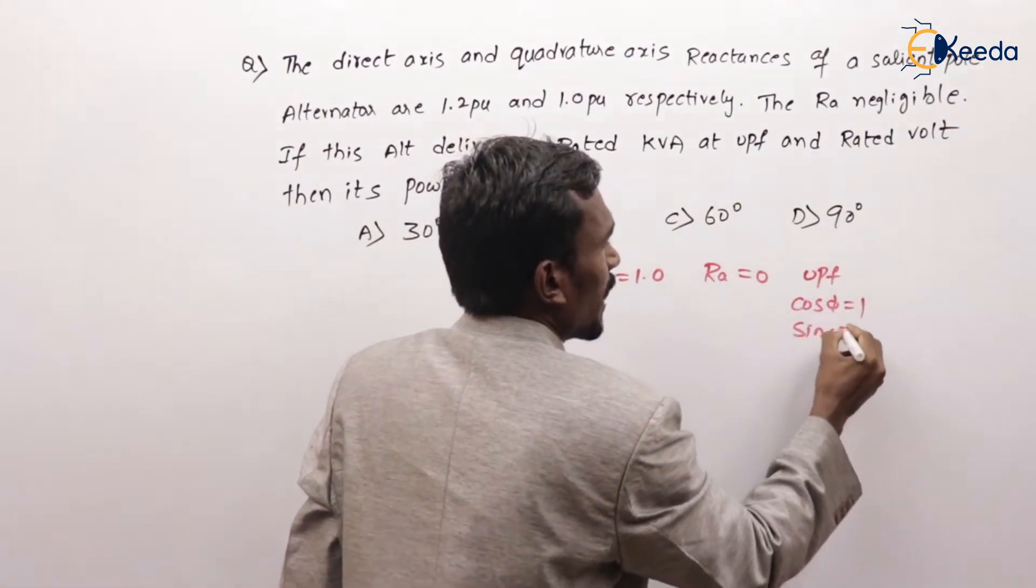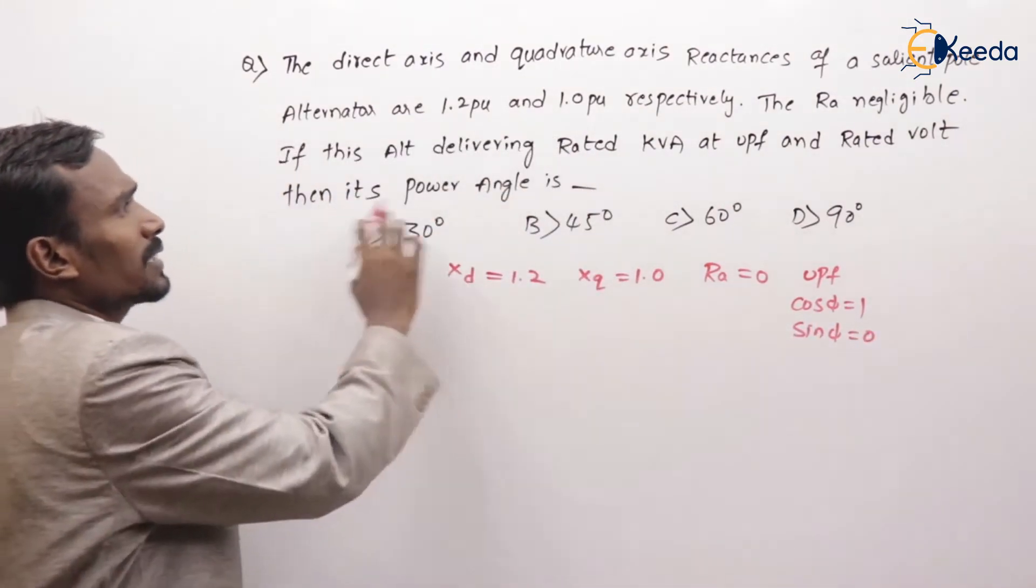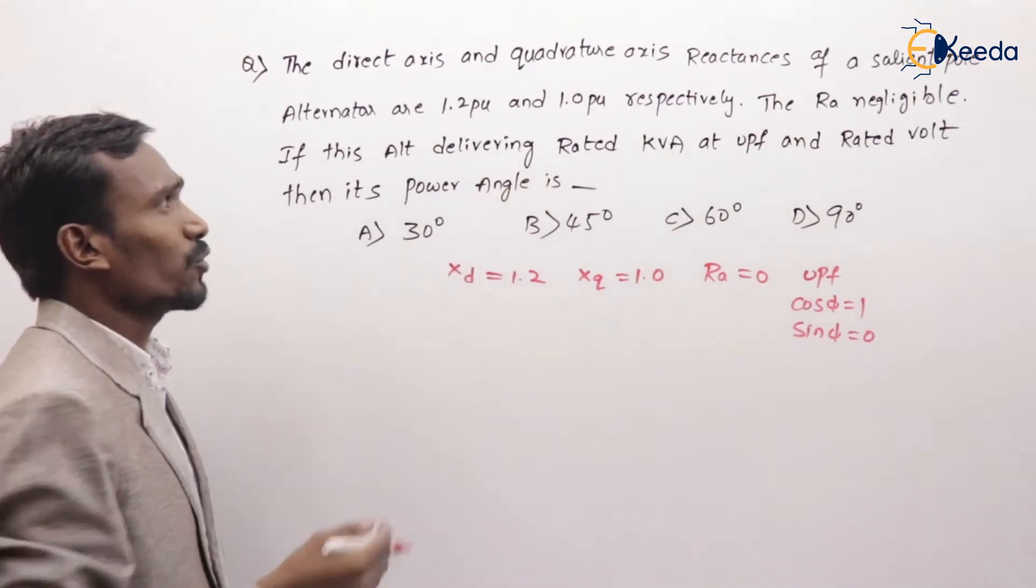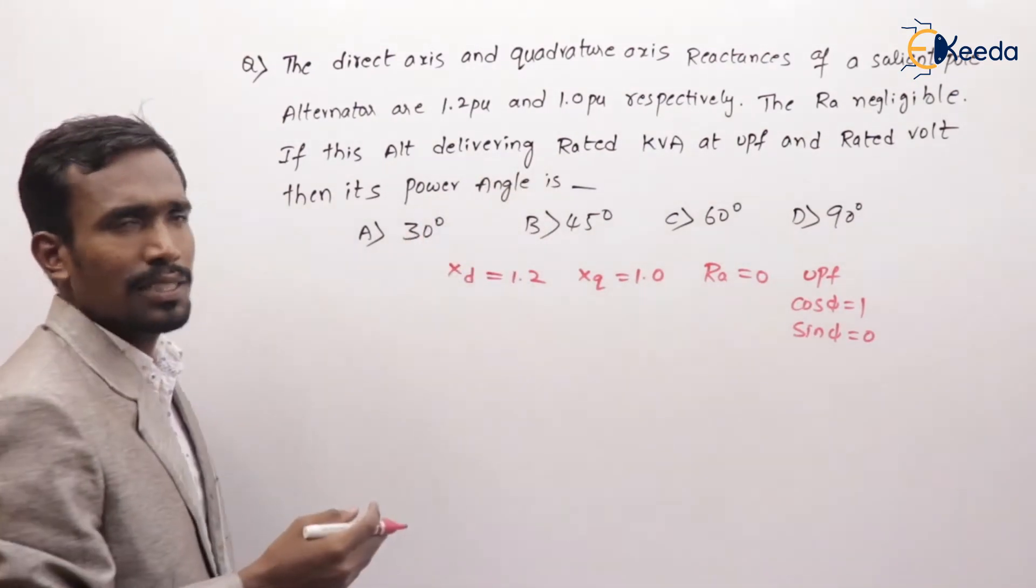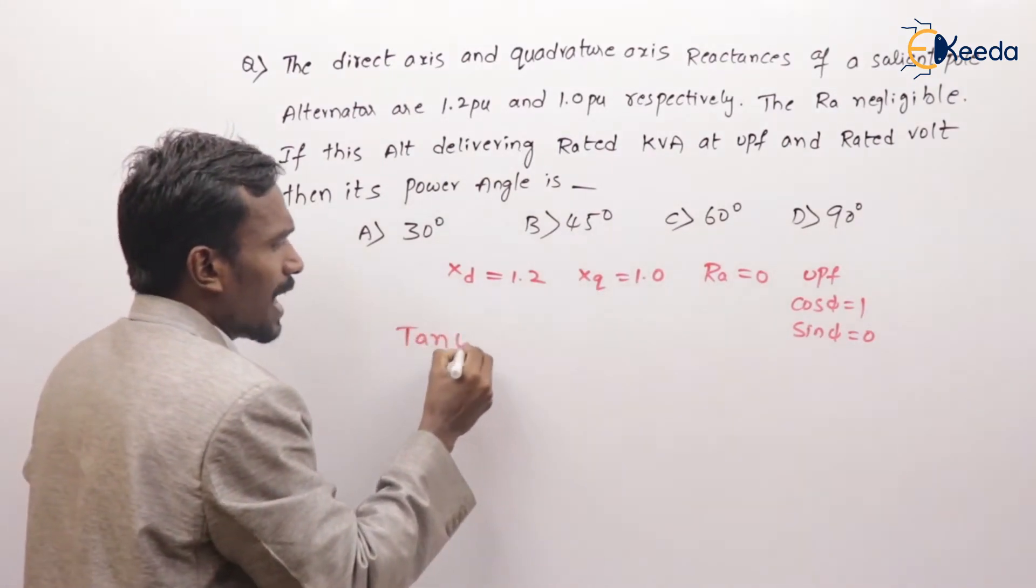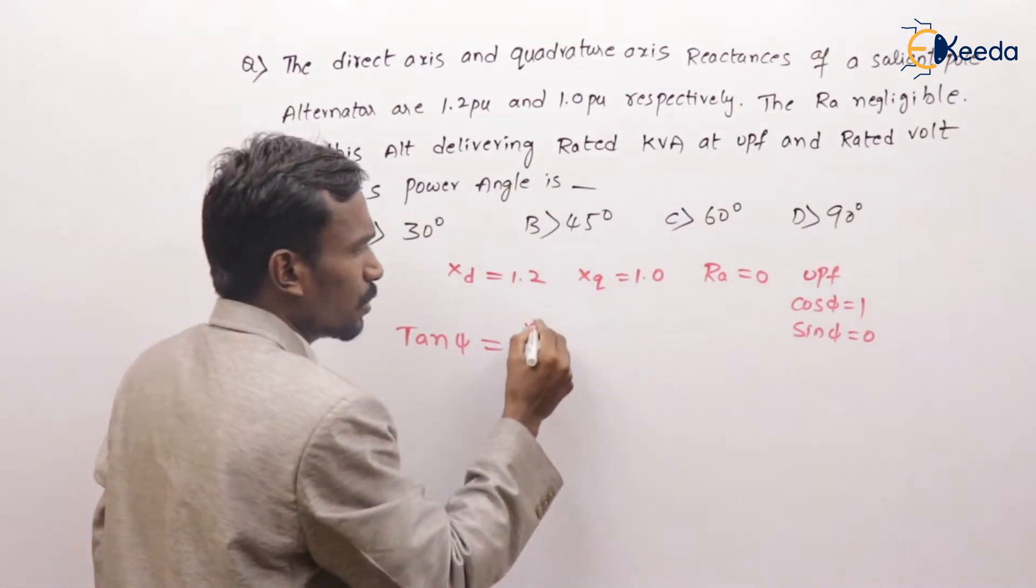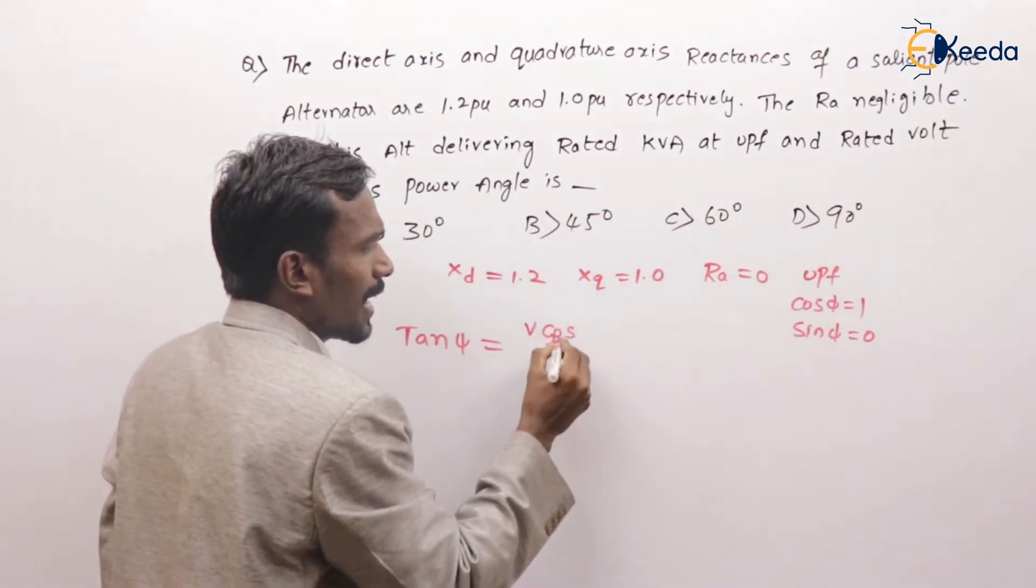Unity power factor, nothing but cos φ is equal to 1, sin φ is equal to 0, and rated voltage. Then its power angle is—actually they want the power angle delta. We have a formula: tan ψ is equal to V sin φ.